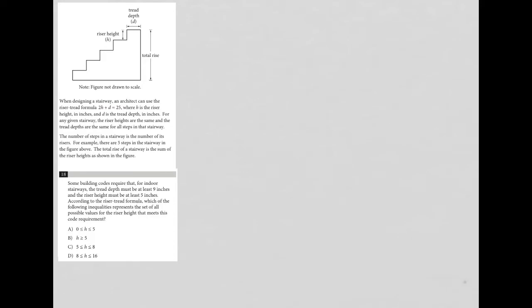So this question is based upon the provided diagram here. The information provided lets us know that the riser tread formula is 2H plus D equals 25. I always write down equations when they're given in the question. We know that H is the riser height and D is the depth.